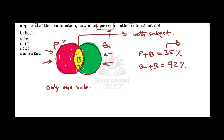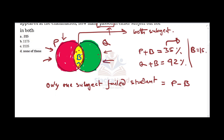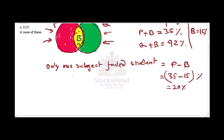We want to find only-one-subject failed students. For subject P, only P failed equals P minus B. We are given B equals 15%, so P minus B equals 35 minus 15, which is 20%. So 20% are students who failed only one subject P.